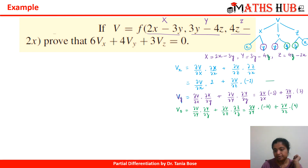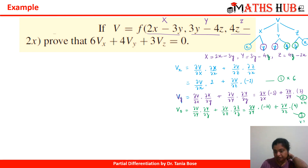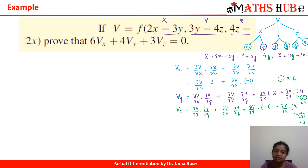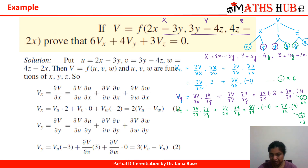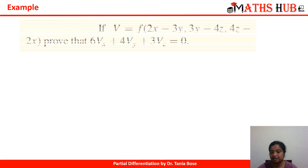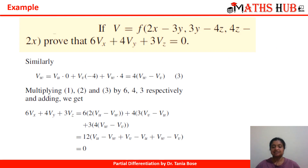Label these equations 1, 2, and 3. Multiply equation 1 by 6, equation 2 by 4, and equation 3 by 3, then add. All the coefficients cancel out, giving the result equal to 0. I have left this final addition step for you to complete and verify.